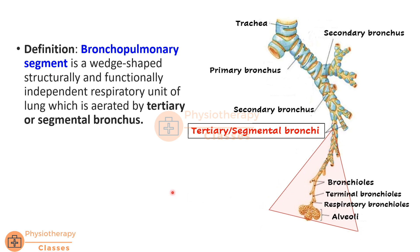We can add more to the definition: a bronchopulmonary segment is also a structurally and functionally independent respiratory unit. It does not depend on adjacent parts of the lung for its blood supply or aeration. So the complete definition is: a bronchopulmonary segment is a wedge-shaped or pyramidal-shaped, structurally and functionally independent respiratory unit of the lung, which is aerated by a tertiary or segmental bronchus.